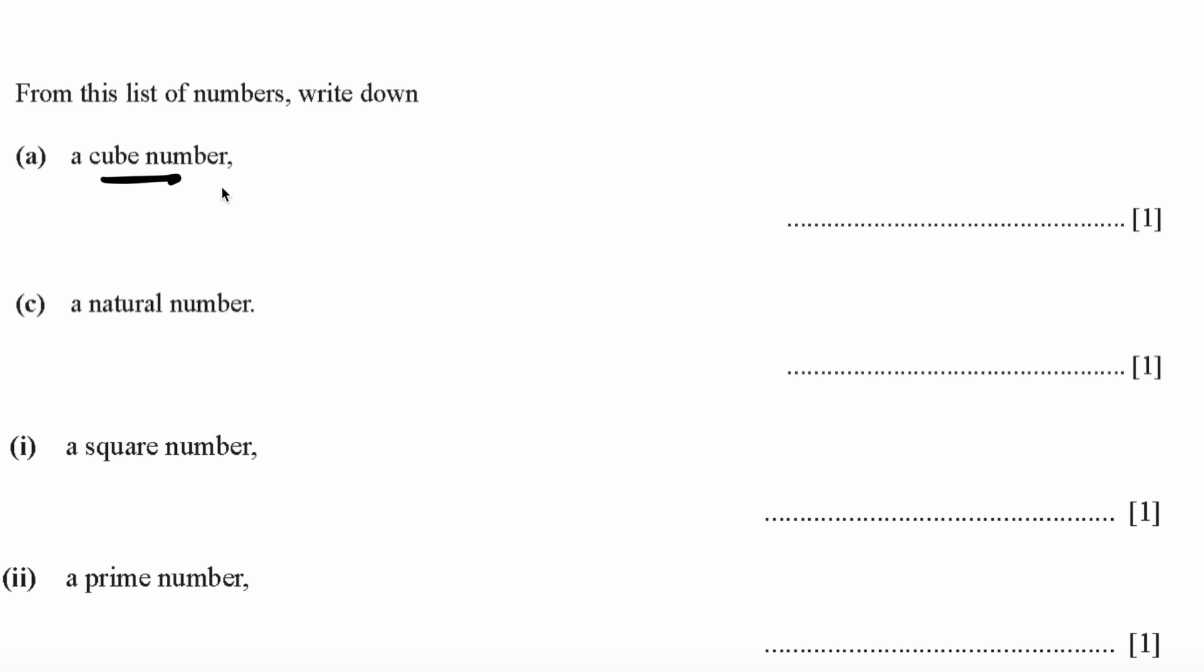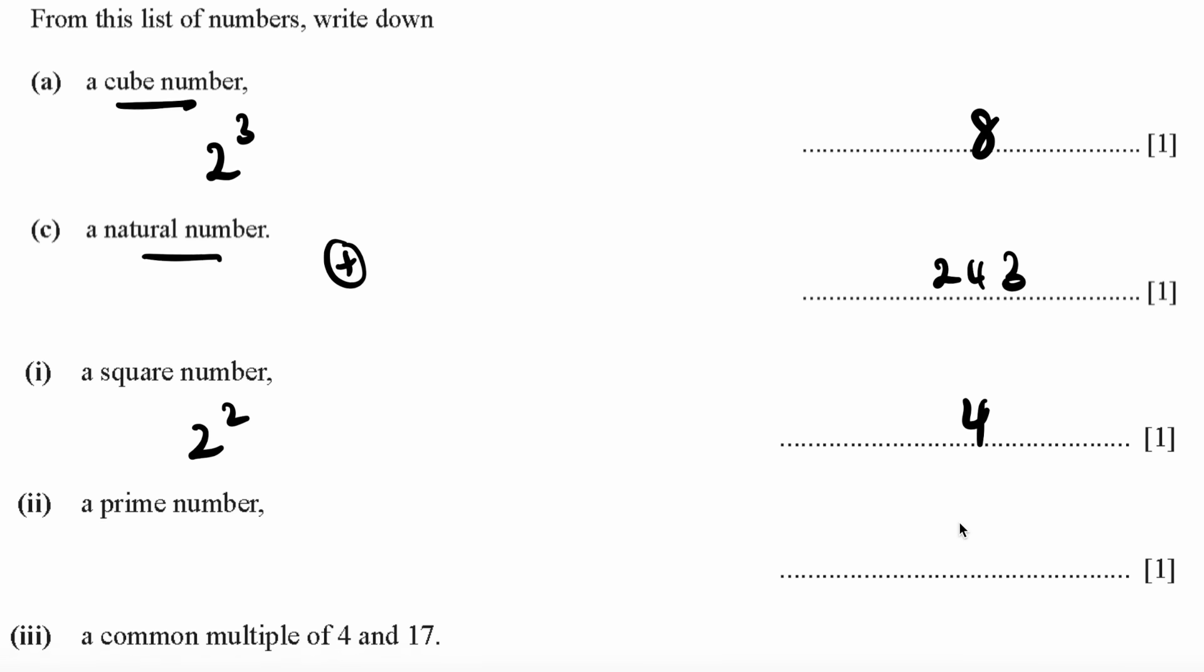A cube number is any number to the power of 3, for example 2 to the power 3 which is 8. A natural number is any number that is positive and is a whole number, for example 243. A square number is any number that is squared, for example 2 squared which is 4.